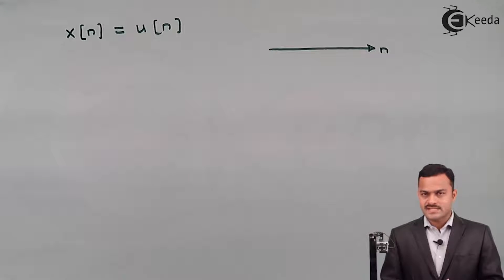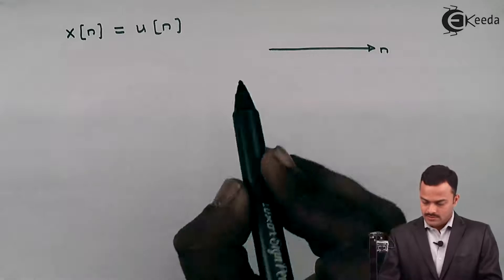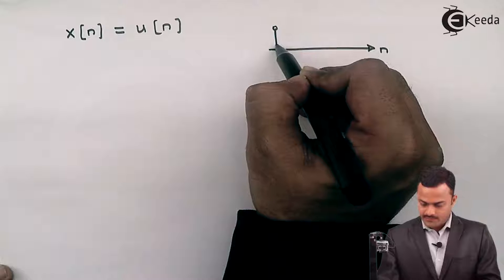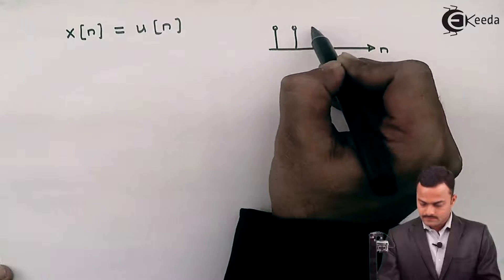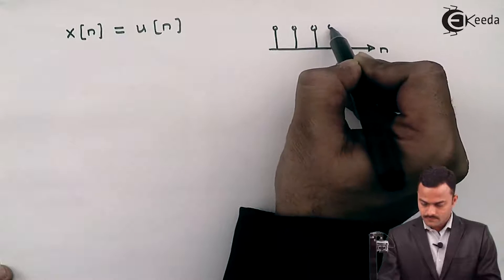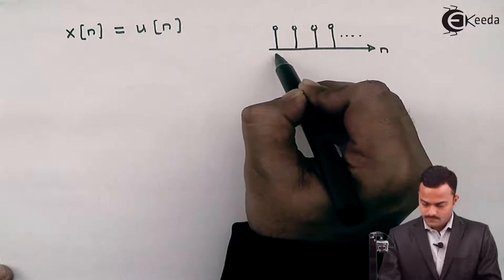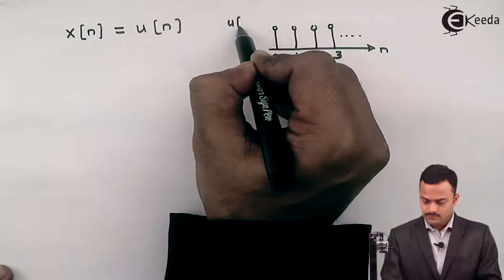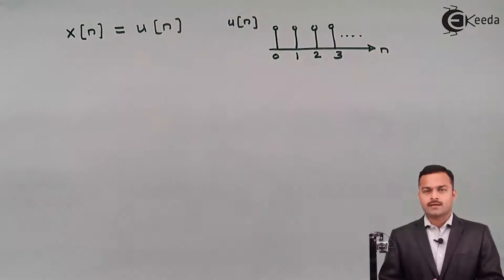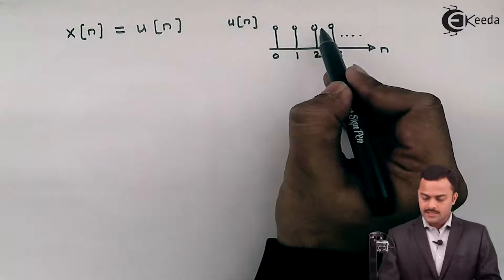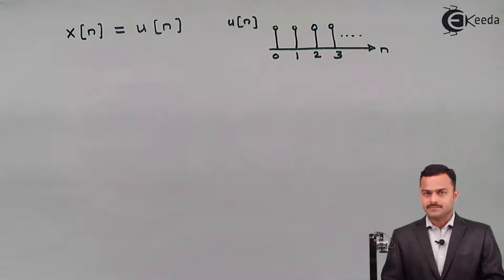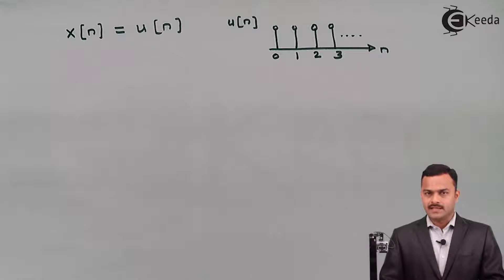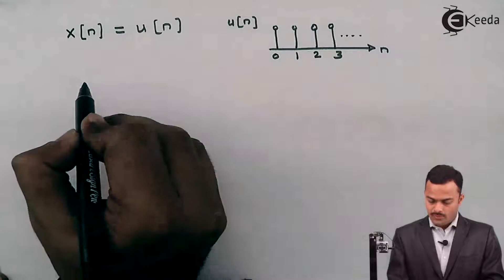For any value of n from 0 to infinity, the signal value is 1. This is a basic fundamental signal, u(n). We need to check whether this signal is an energy signal or a power signal. The first step is to find the energy of this signal by applying the formula.